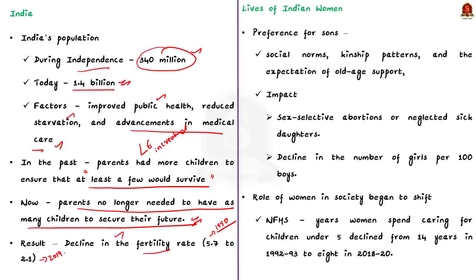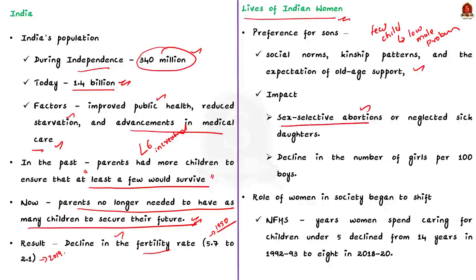Now let us focus on how these population changes affected Indian women. As families started having fewer children, the probability of having a male child came down. But Indian families prefer male children due to societal norms, kinship patterns, and expectations of old-age support. As a result, some parents resorted to sex-selective abortions or neglected sick daughters, resulting in a decline in the childhood sex ratio — notably affecting children under the age of five.